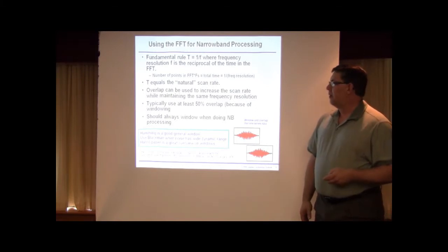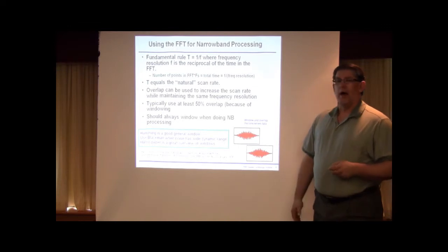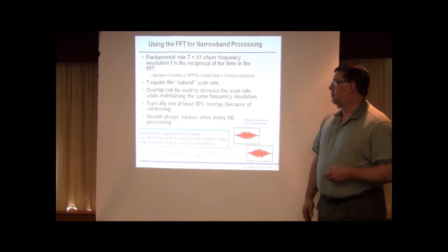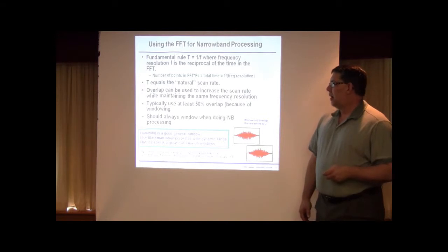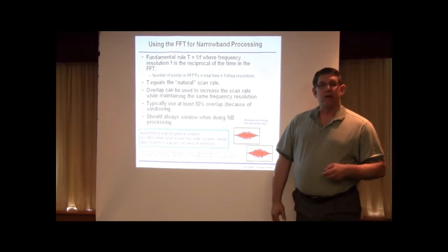And we should always window when doing narrowband processing because if there's edge effects, we can get that energy splattered across the spectrum and it's not real. So in general, a hamming window is a good general window to use. There's a Blackman window that has much lower side lobes with narrower main beam that may be good when the noise has wide dynamic range. Fred Harris did a seminal paper on this, has lots of different windows and is a good reference if you want to explore more on windows.